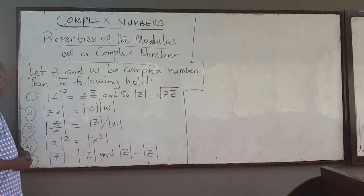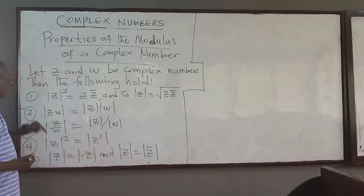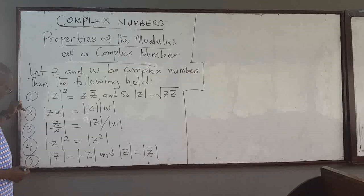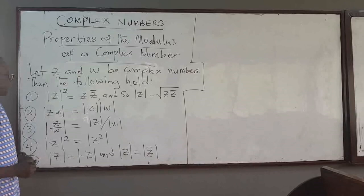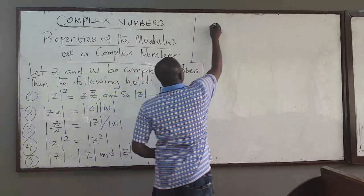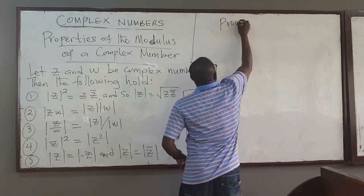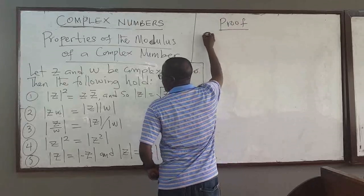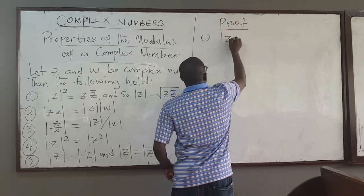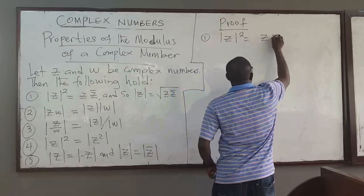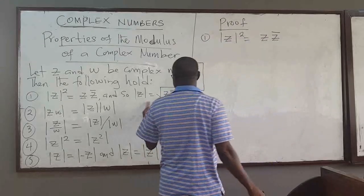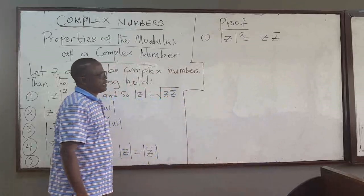I will prove some of these properties — we're going to do 1 and 2, and then probably 5, and then you can try 3 and 4. So, number 1 says that |Z|² is equal to Z times Z-conjugate. Let's do this.